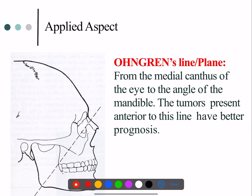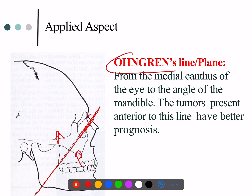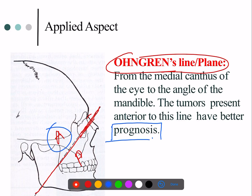A few more applied aspects: if you draw a line from the medial canthus of the eye to the angle of the mandible and divide it into anterior and posterior — this particular line or plane is used to help in prognosis. Tumors that lie anterior to this line have better prognosis when compared with tumors that lie posterior to it.